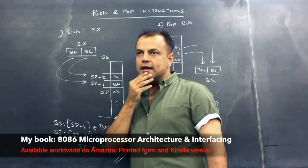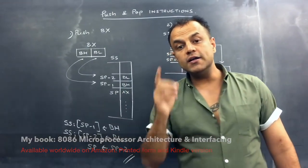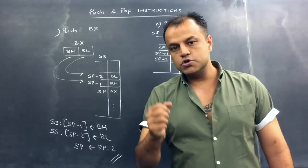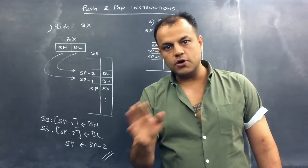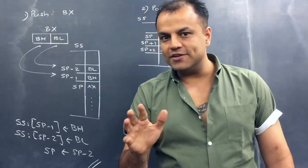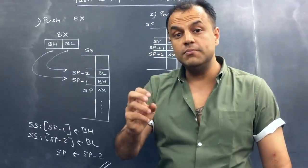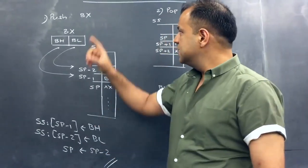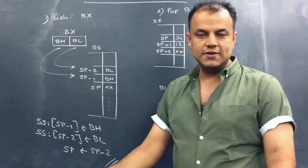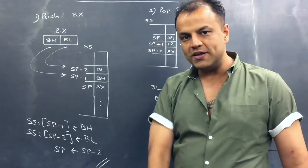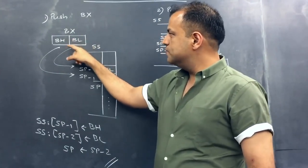The only thing you can write next to PUSH is a register, and that register has to be a 16-bit register. So BL is not allowed, BH is not allowed — but BX is valid. You can write AX, CX, and so on. So the two rules are: first, it cannot be a number, it has to be a register; second, it has to be a 16-bit register.